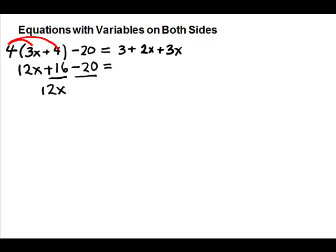They are different signs, so subtract and take the sign of the larger. Then we'll work on the right-hand side — we have like terms there. The x terms are alike, they have the same sign, so we add and keep the sign. I like my variable first so I'll write it first, then bring down the plus 3.